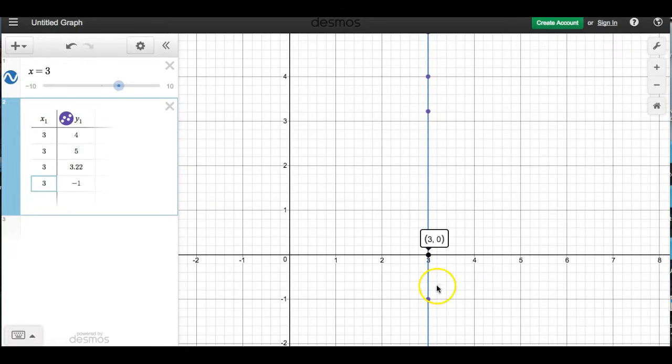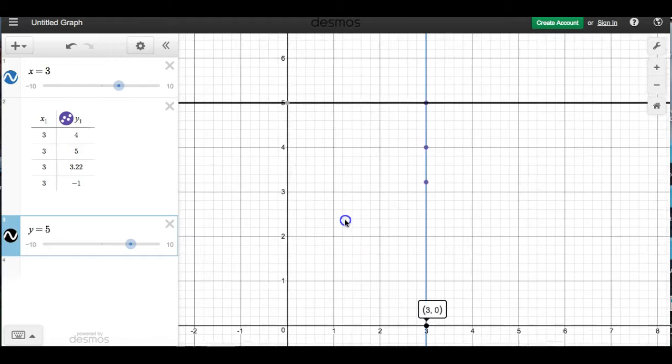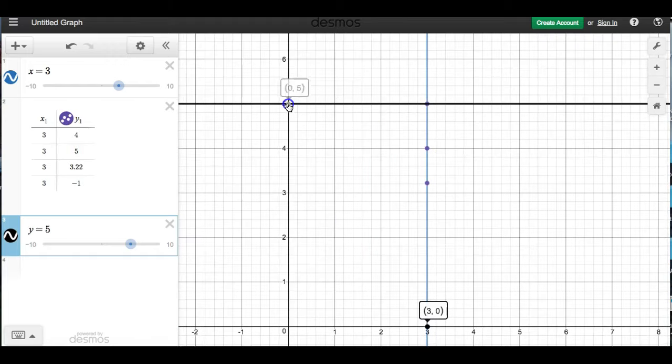So you can see that x will give us a vertical line because here is where x is 3. Y will give us a horizontal line. Let's do another example. Because here is where y is 5. And obviously, they cross where x is 3 and y is 5. Right? Horizontal for y equals and vertical for x equals.